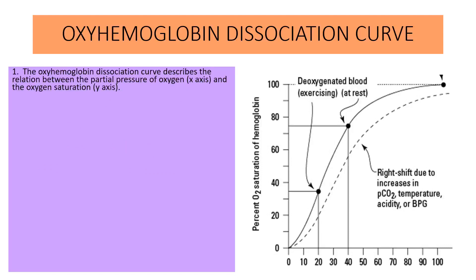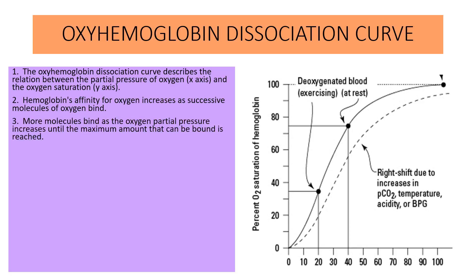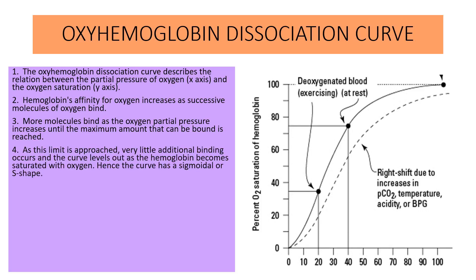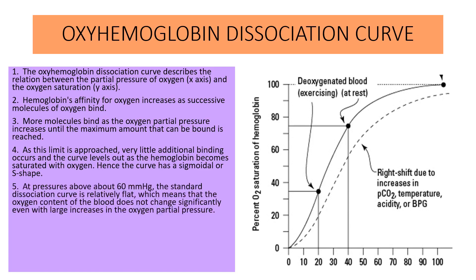The oxyhemoglobin dissociation curve describes the relation between the partial pressure of oxygen on the x-axis and the oxygen saturation on the y-axis. Hemoglobin's affinity for oxygen increases as successive molecules of oxygen bind. More molecules bind as oxygen partial pressure increases until the maximum amount that can be bound is achieved. As this limit is approached, very little additional binding occurs and the curve levels out as hemoglobin becomes saturated with oxygen. Hence, the curve is sigmoidal or S-shaped.